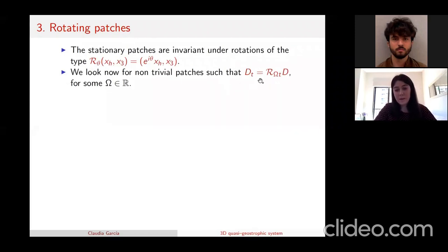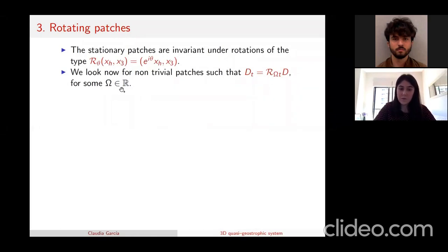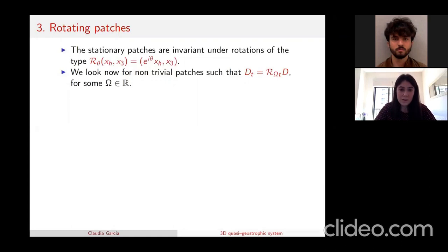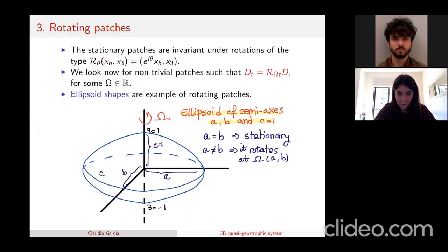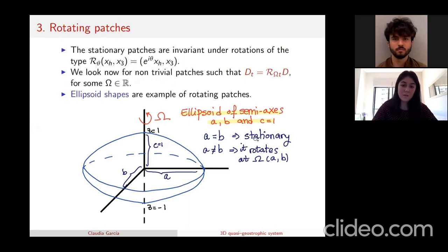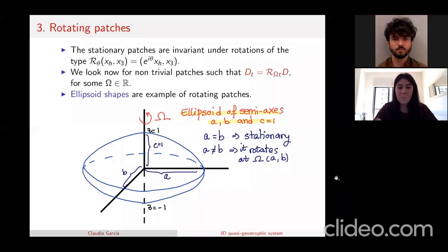We want to find an angular velocity omega (a real number) and an initial domain such that the evolution of the initial domain is a rotation at that constant angular velocity. The motivation comes from known examples of this type of evolution, which are ellipsoid shapes. For an ellipsoid with semi-axes a, b, and c fixed to one: if a equals b, it is stationary; however if a differs from b, we can check that the shape rotates at a constant angular velocity omega depending on a and b.